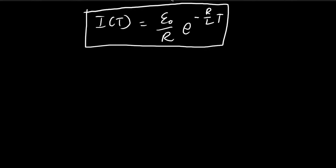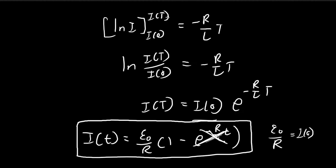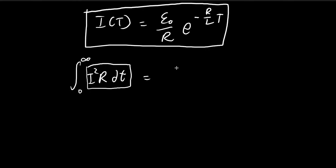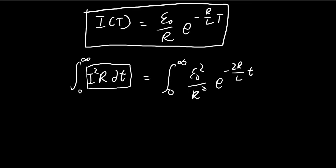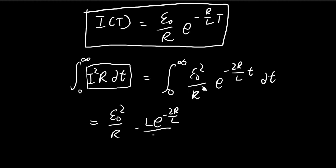For Part B, we want to find the total amount of energy delivered to the resistor. We do that by considering power: i²R is the amount of energy released in the resistor per second. Multiplying by dt gives the infinitesimal energy released at the resistor, so we just integrate this from zero to infinity. i² becomes ε²/R², times e to the power of negative 2R/L · t. There's an R here that partially cancels, so we're left with ε²/R · e^(−2R/L · t) dt. Integrating this is simple enough, and we flip the constants. When the upper bound is infinity, the exponential is zero; when it's zero, it equals 1.